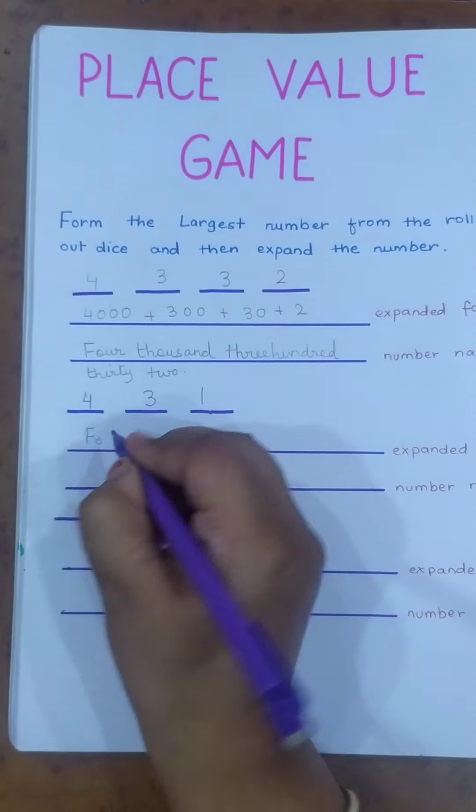Now again, two-digit numbers. I'll take two dice. I'll roll it. This is two, one, that is twenty-one. So I will write 21, and then I'll expand it. So 20 plus 1 will make 21, and then the child will be writing the number name, that is twenty-one.